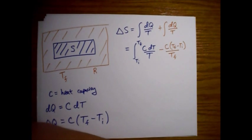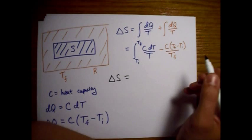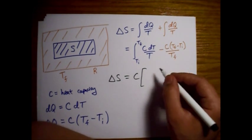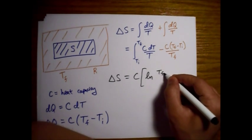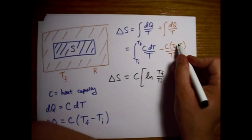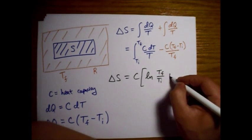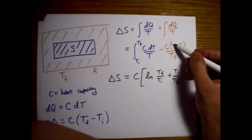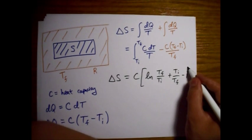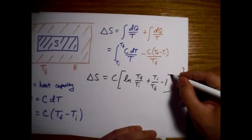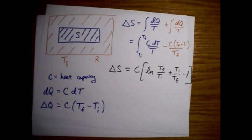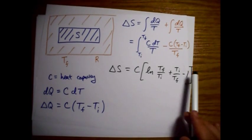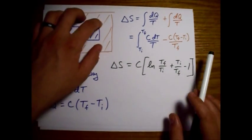Let's use black so we don't get confused with the colors. I'll factor out a C. When we take the integral of 1 over T, we get a natural log. And then we'll have a Tf divided by Ti. And then we factored out this C already. I'll have to say plus Ti over Tf. I'm putting this minus sign in through. And then we'll just have a Tf over Tf at the end. So minus 1. So this is the total change in entropy for the universe for this process.